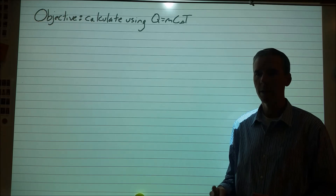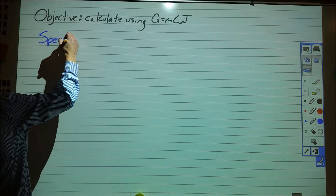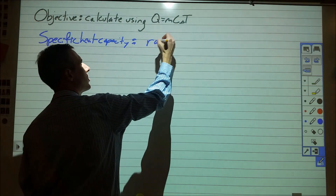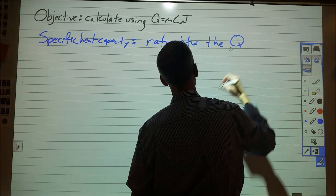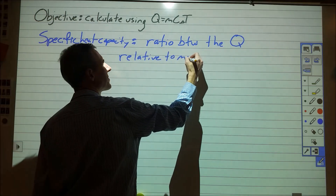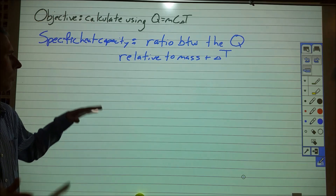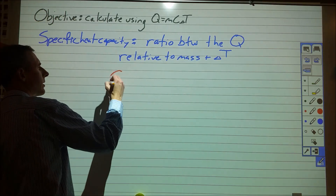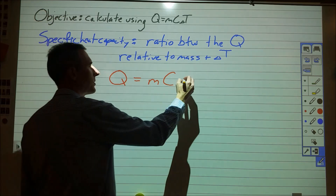Today we're going to cover a new concept called specific heat capacity, but it's something that relates to a lot of things you're already familiar with. Specific heat capacity has the following definition: it's the ratio between the heat applied to something relative to mass and temperature change for that substance. The equation is that heat is equal to the mass times the specific heat capacity times the temperature change.